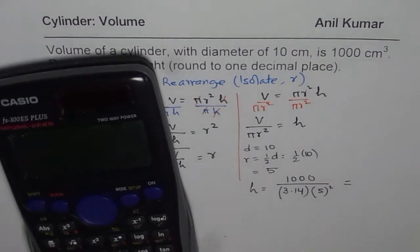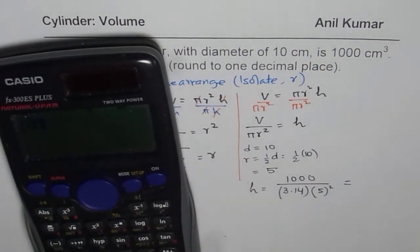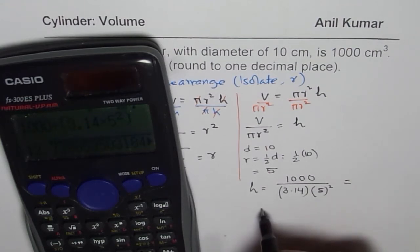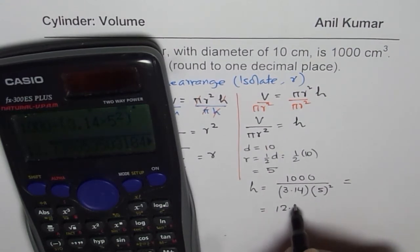Let us use calculator. So we have 1000 divided by both these numbers. Put them in brackets: 3.14 times 5 square, bracket close, equals. It says 12.73.